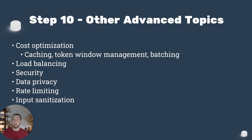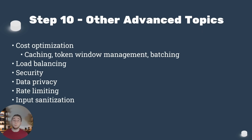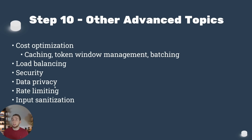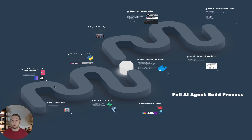Last up, there are some advanced topics I want to mention quickly. These are things I won't go into great detail on in this mini series because I want to keep it concise, but I want to point them out to show how much can really go into building an enterprise-level, production-grade AI agent. There is so much that can go into it: cost optimization like prompt caching, managing the token window, batching requests, load balancing, security and data privacy best practices, rate limiting, input sanitization — this list goes on and on. I want to keep covering these and maybe have dedicated videos for them on my channel.